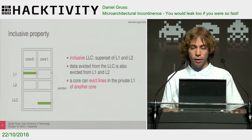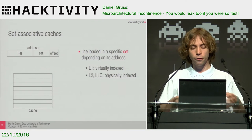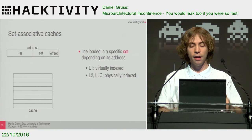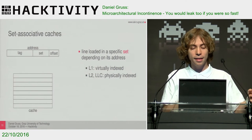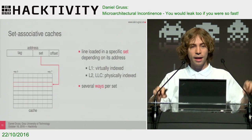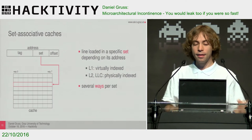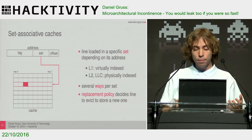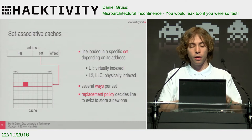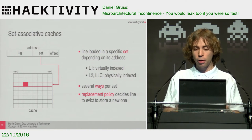The next property we are going to exploit is that caches are set associative. If you work on a lot of congruent addresses, they would map all to the same cache line. Nowadays we don't have lines anymore, but sets with multiple ways that are equivalent. And a replacement policy decides which of the ways is evicted and where the new one is stored. This is all we need to perform our first attack.